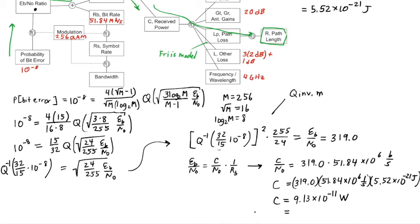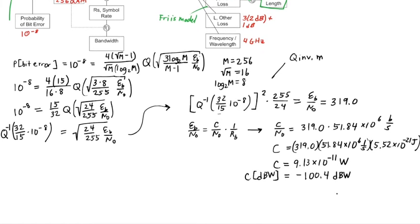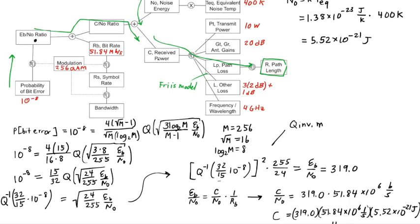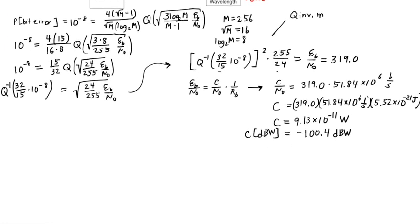Converting this to dB, so I have dB of watts, that's referred to 1 watt. That's minus 100.4 dB watts. And let's give ourselves some more space. We have this power. So, now we're over here in the diagram. We're right here. And we're trying to use all these relationships to get us back to the path length using the Friis model.